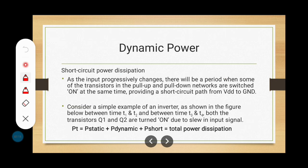Now we come to short-circuit power dissipation. In this case, the input progressively changes from 0 to 1 or 1 to 0. Based on the input value, the PMOS transistor and NMOS transistor turn on or turn off. The PMOS transistor represents the pull-up network and the NMOS transistor represents the pull-down network. Based on the input values, both transistors may switch on at the same time, creating a short path from VDD to ground.